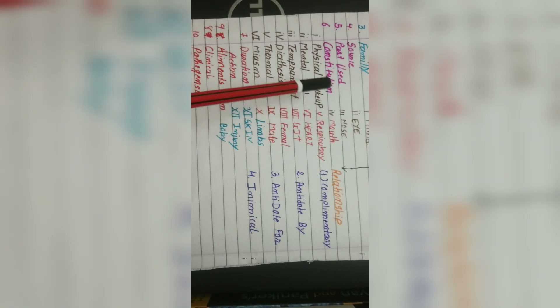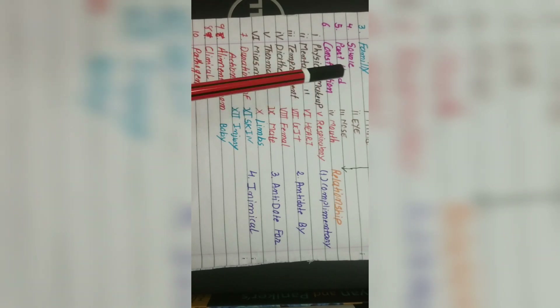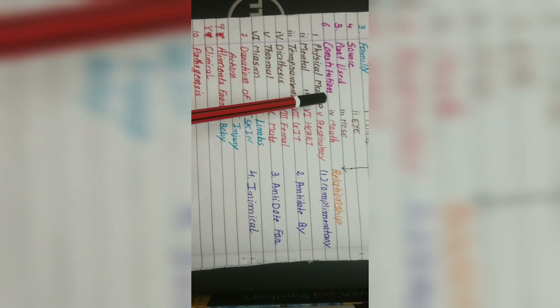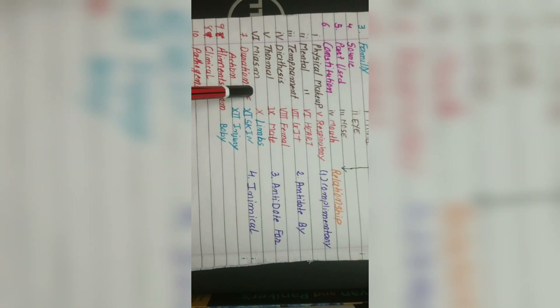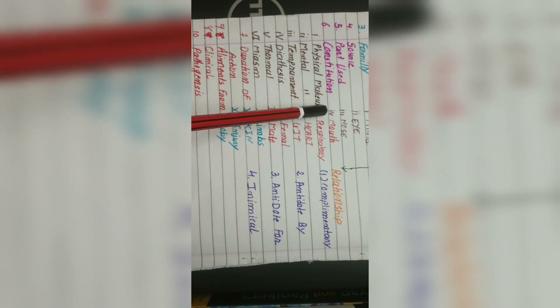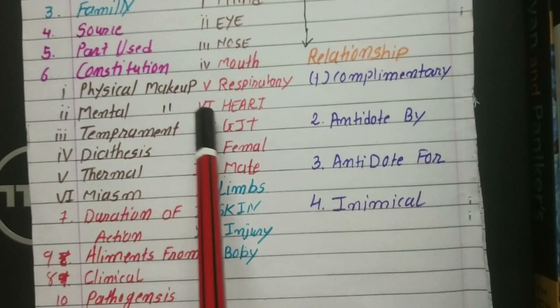Constitution is mainly written for polycrest remedies. If you are writing an acute remedy, you will write a little bit about it, but in polycrest remedies the constitution is very important. So you write the heading 'Constitution' and within it you write sub-headings: first, physical makeup; then mental makeup; then temperament; then diathesis; and then thermal and miasm.